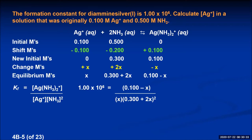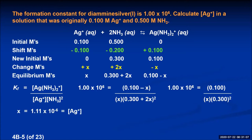This is fairly complex to solve exactly, but we can approximate because x is small — the negative x subtracted from 0.100 in the numerator is really small and I can ignore it, and the 2x added to the 0.300 in the denominator is also really small and I can ignore that as well. So I solve instead: 1.00 times 10 to the sixth equals 0.100 divided by x times 0.300 squared. Solving this, x turns out to be 1.11 times 10 to the minus 6 molar, which is the molarity of the silver ions — which is what the question asked for.